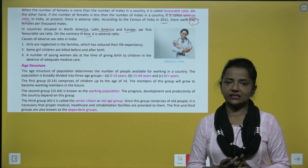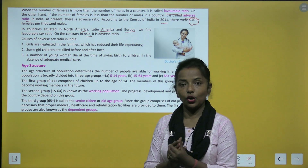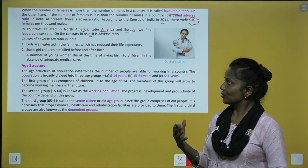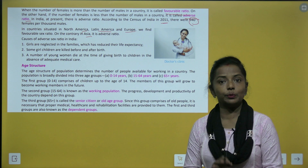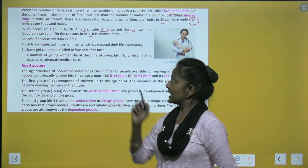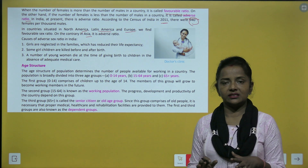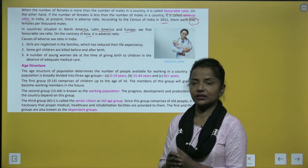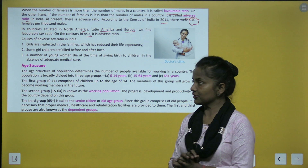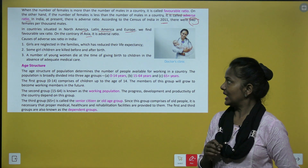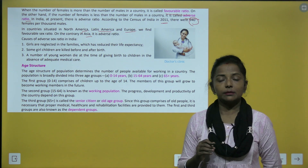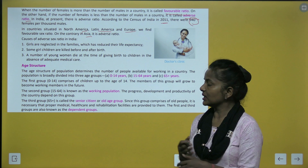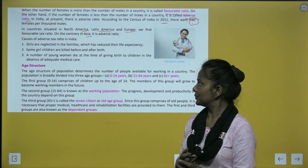Causes of adverse sex ratio in India: Girls are neglected in families, which has reduced their life expectancy. Some girl children are killed before or after birth, as female births are still not accepted in many places. Additionally, a number of young women die during childbirth due to the absence of adequate medical care.